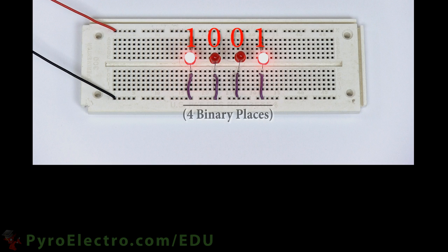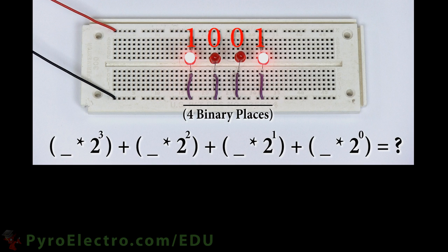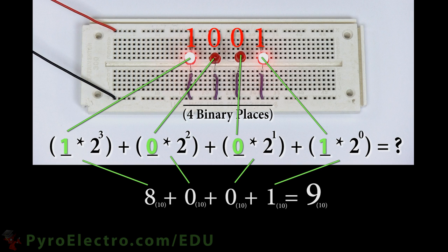Converting that further into decimal, we get 1 times 2 to the power 3 plus 0 times 2 to the power 2 plus 0 times 2 to the power 1 plus 1 times 2 to the power 0, which in decimal equals 8 plus 0 plus 0 plus 1, which equals 9.